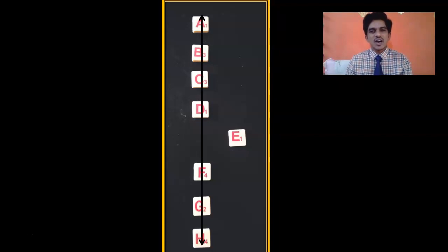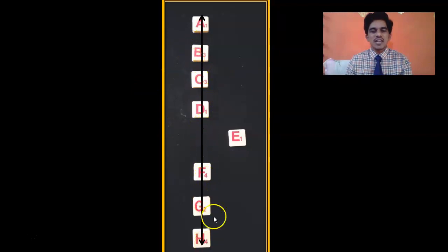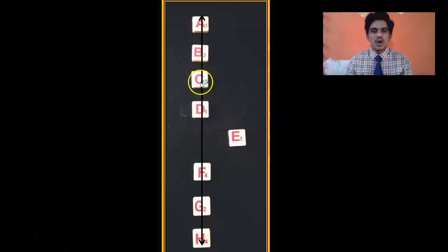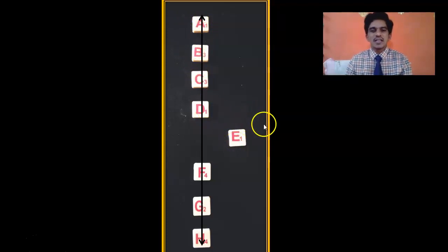E is actually out of the line — E is non-collinear with the straight line joining A, B, C, D, F, G, and H. By joining A, B, C, D, F, G, H you cannot have a triangle. But you can have a triangle by joining A, B with E, or B, D with E, because E is out of the line. So you can have a triangle by joining those kinds of points.